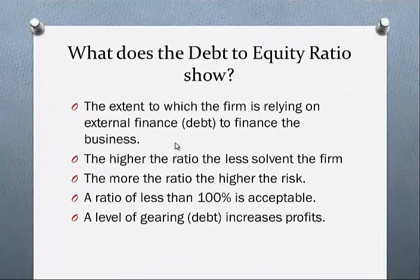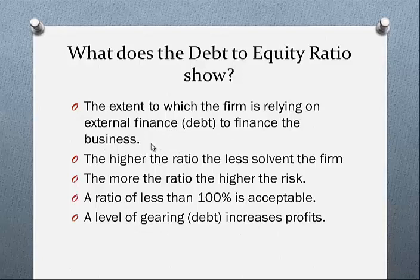What does it all show? It shows the extent to which the firm is relying on external finance to finance the business's assets. The higher the ratio, the less solvent the firm. The higher the proportion of debt relative to owner's equity, the higher the risk. A ratio of less than 100% is acceptable.